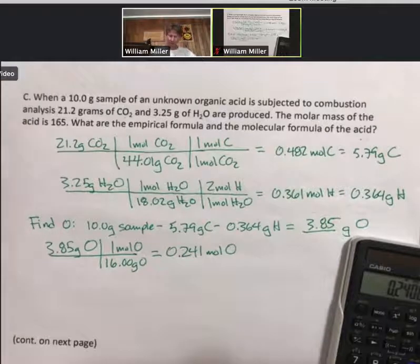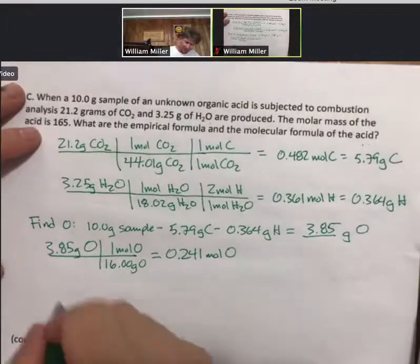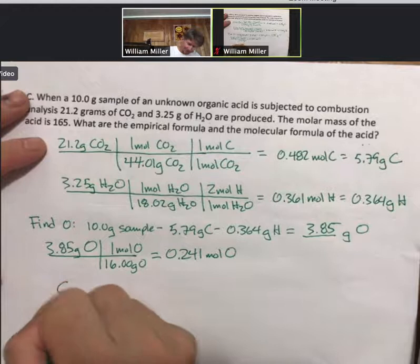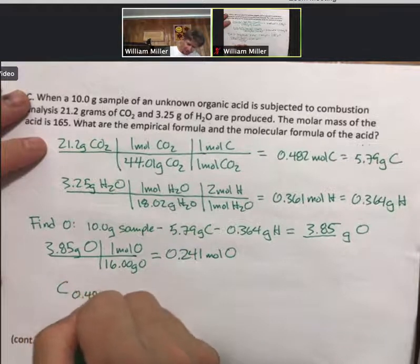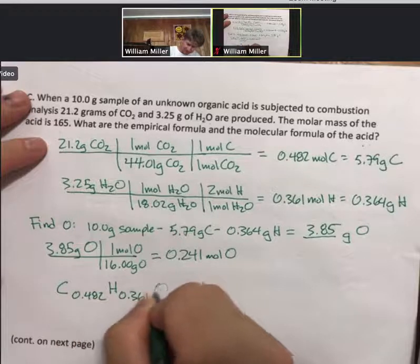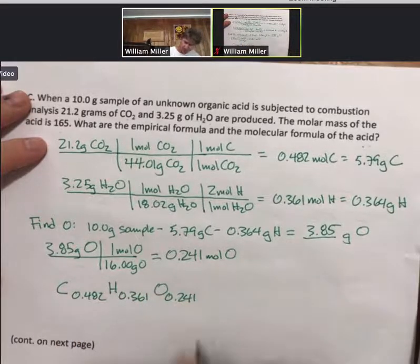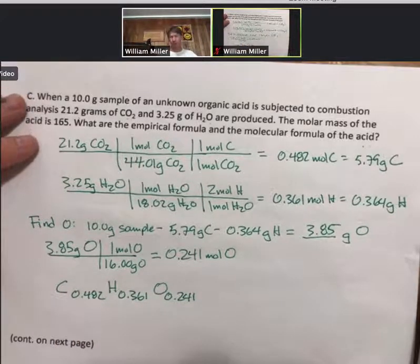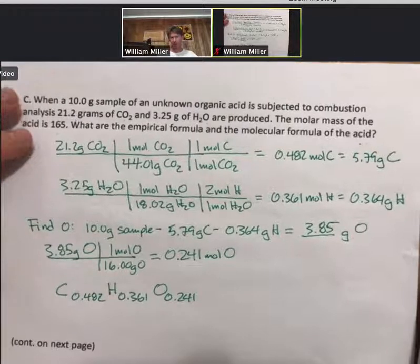Alright, so now, again, I like to get organized. So, C 0.482, H 0.361, O 0.241 are my mole ratios that I want to attempt to turn into small whole numbers.